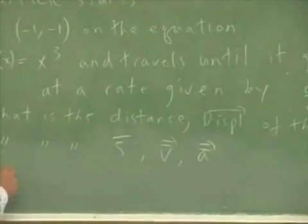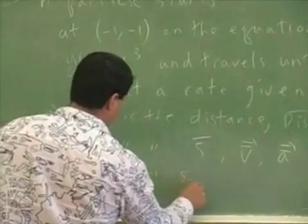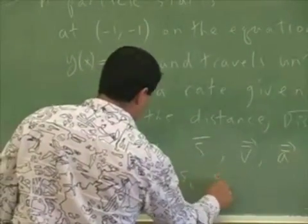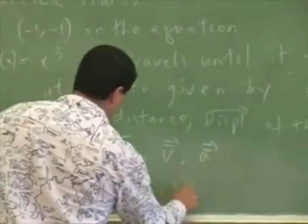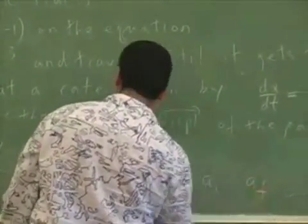And then Part C: What is the initial speed, final speed, initial velocity, final velocity, initial acceleration, final acceleration?